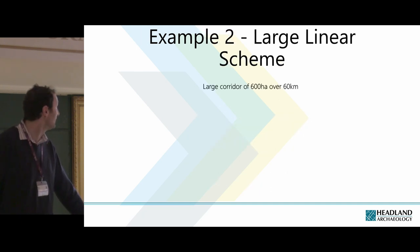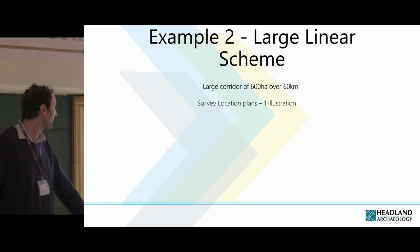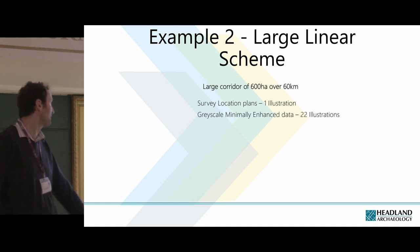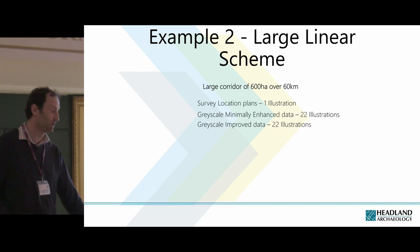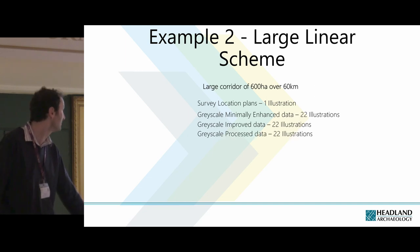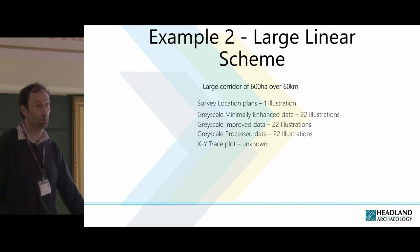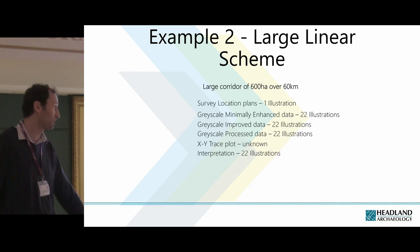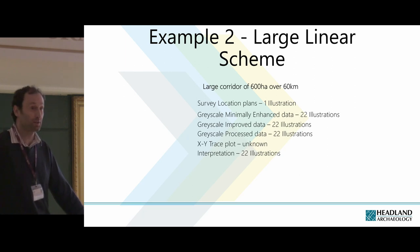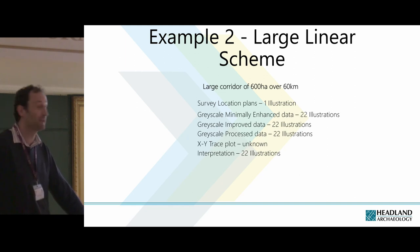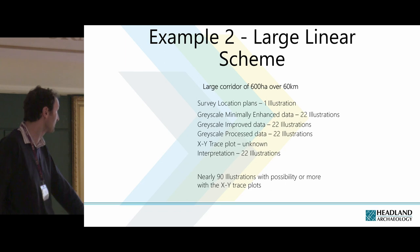The same thing applies for a linear scheme — you can have 600 hectares over 60 kilometres. You've got your survey location plans, then minimally enhanced data, then improved data, then processed data, then optionally XY trace plots, then interpretations. It gets quite annoying for the illustrator, the processor, and the person writing the report, because you're essentially showing illustrations that are superfluous for the report and for the reader. For this type of survey, we might be doing 90 illustrations without XY trace plots.